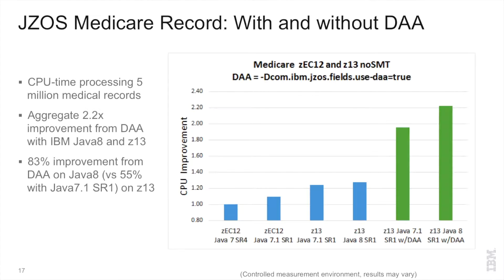The JSOS APIs packaged with the SDK already leverage the Data Access Accelerator under the covers by default. One of the things we've tested is the Medicare sample application that comes with JSOS — this reads five million medical records from a COBOL copybook and operates on them. The Data Access Accelerator APIs exploit the hardware instructions available on the platform while avoiding BigDecimal object creation.